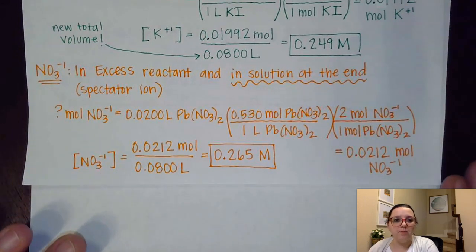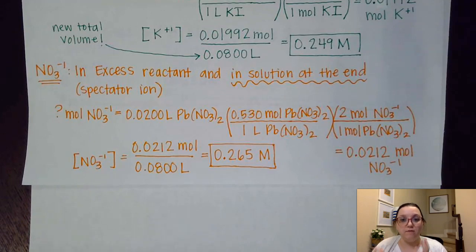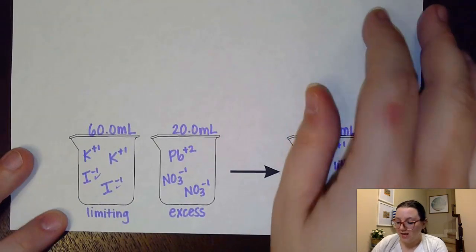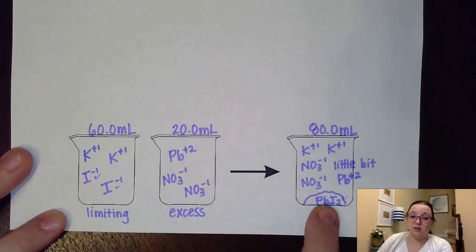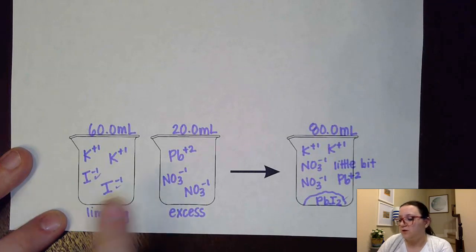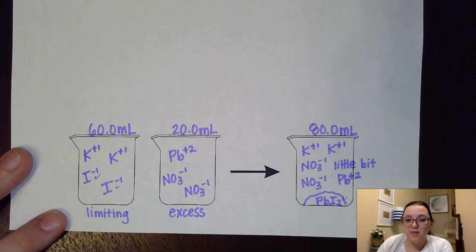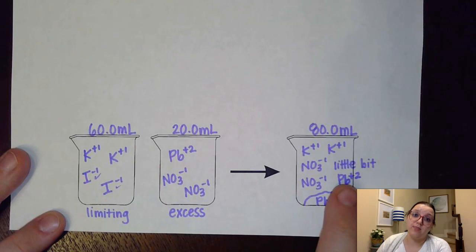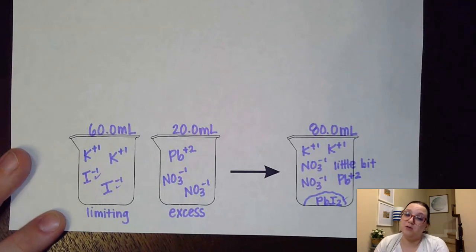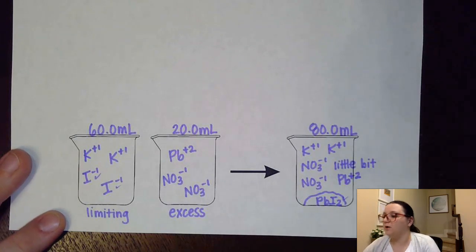The tricky one is going to be lead. The reason lead is tricky is that I used a lot of it to make the solid, so there's only a little bit left in solution. I'm trying to figure out the molarity of lead remaining in solution. I need to figure out how much of it I actually used to make PbI₂ and how much is left over — essentially an excess reactant calculation: how much I had, how much I used, then the amount left over.